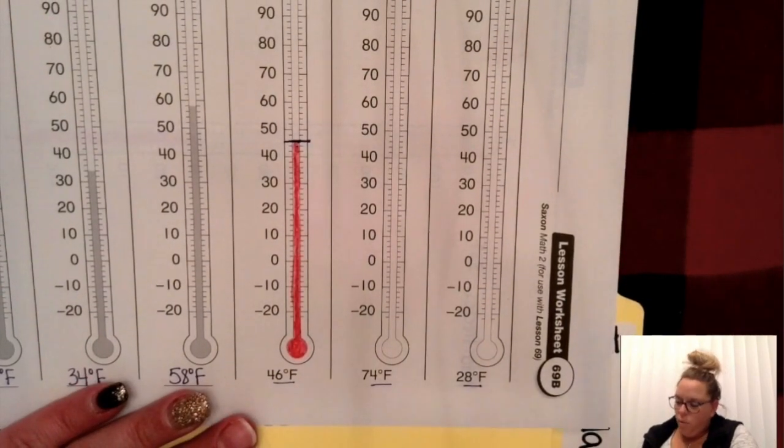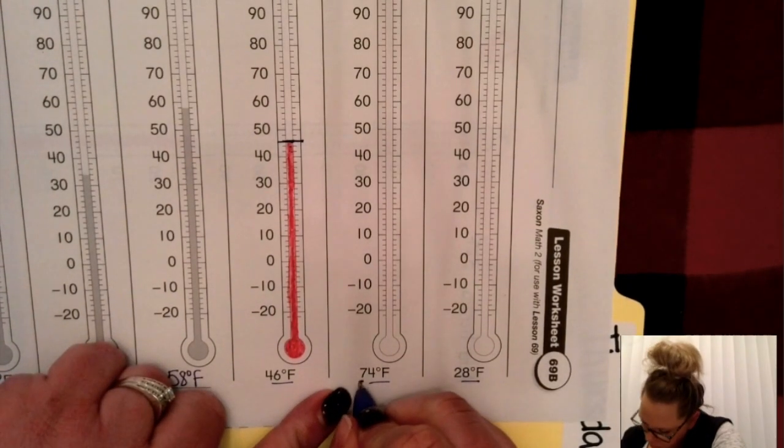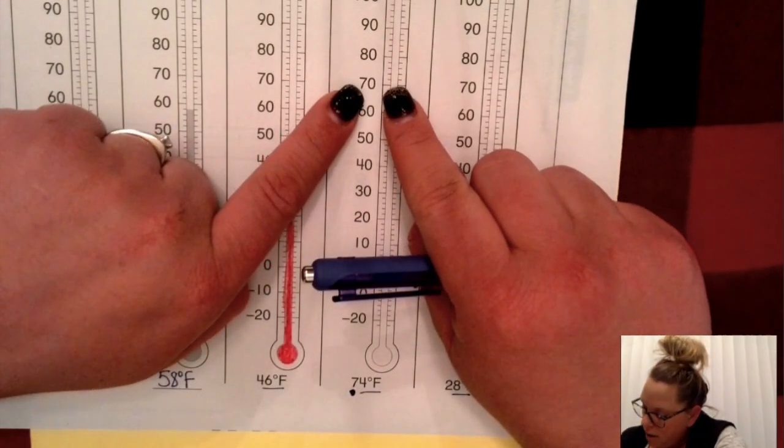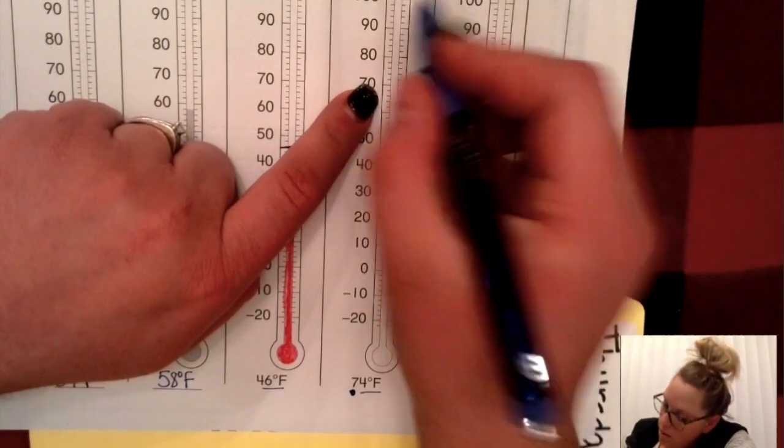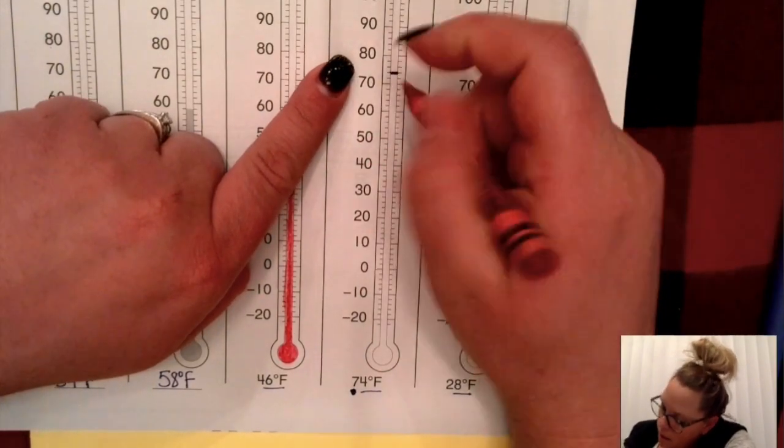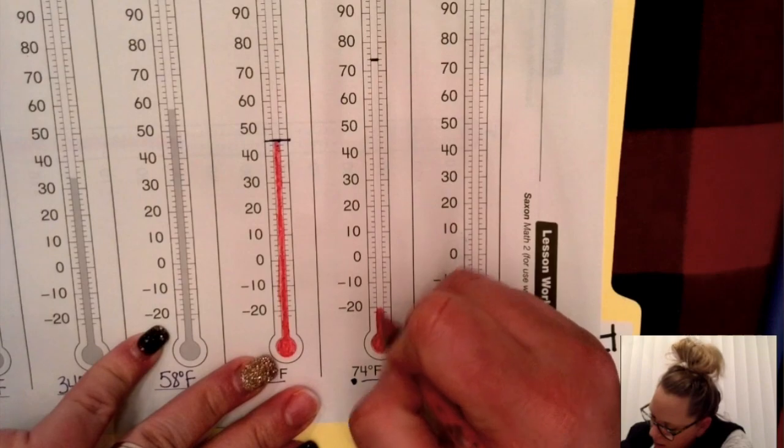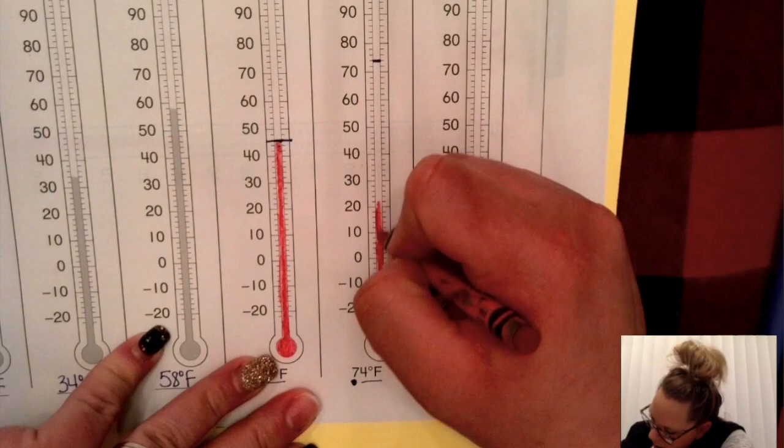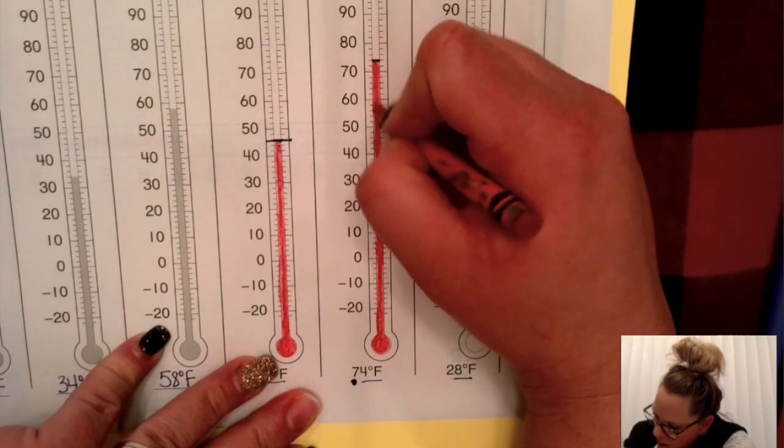The next one is 74. I have to start at 70 and I'm going to count by twos until I get to 74: 72, 74. It's that second set of tick marks. And then go ahead and shade in. Shade in from the bottom up. I did it wrong showing you from the top down on the last one.